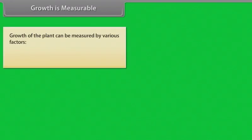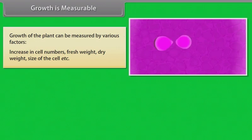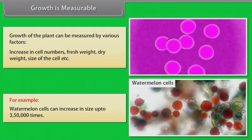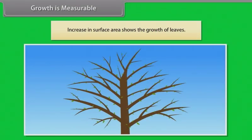Growth is measurable. Growth of the plants can be measured by various factors: increase in cell numbers, fresh weight, dry weight, size of the cell etc. For example, watermelon cells can increase in size up to 350,000 times. Increase in surface area shows the growth of leaves.